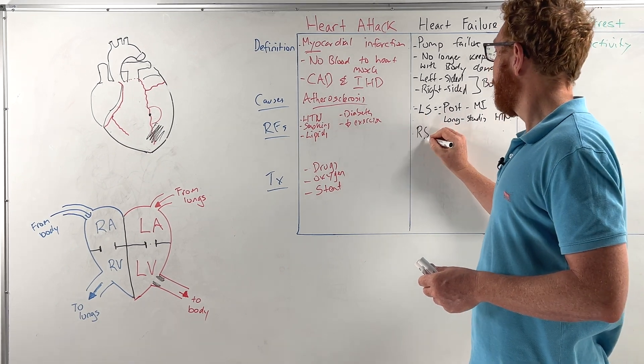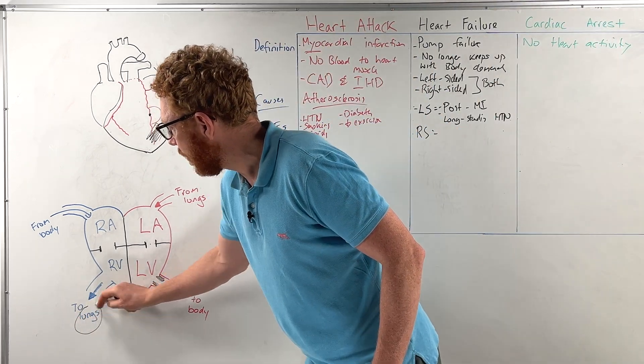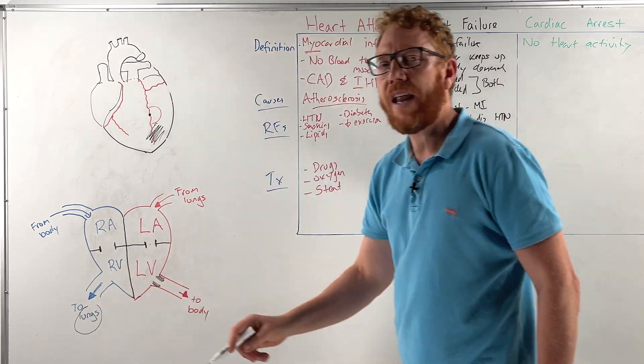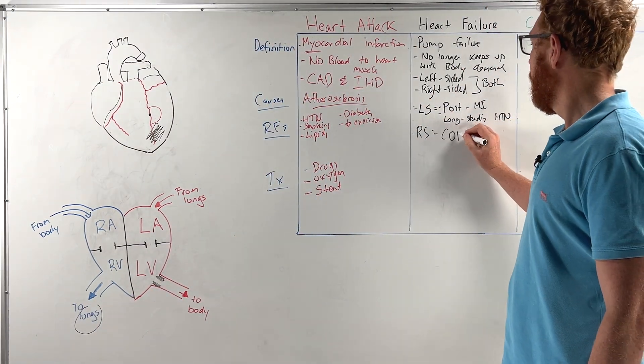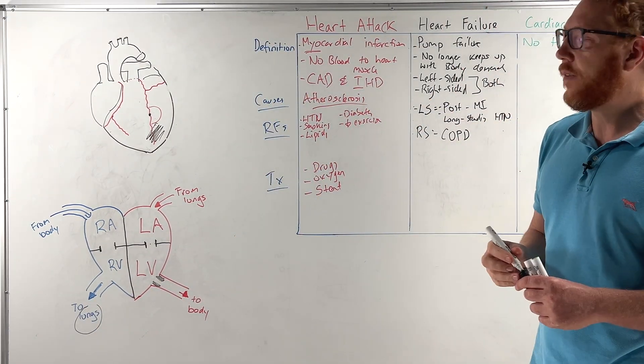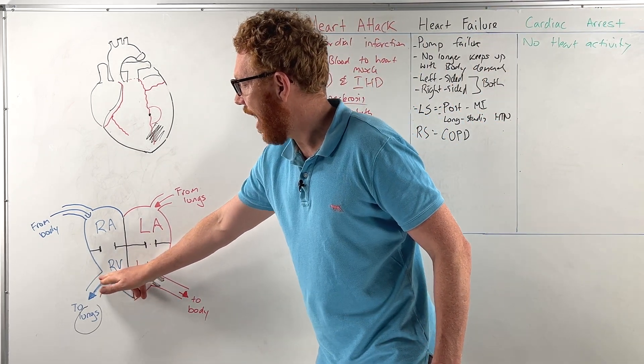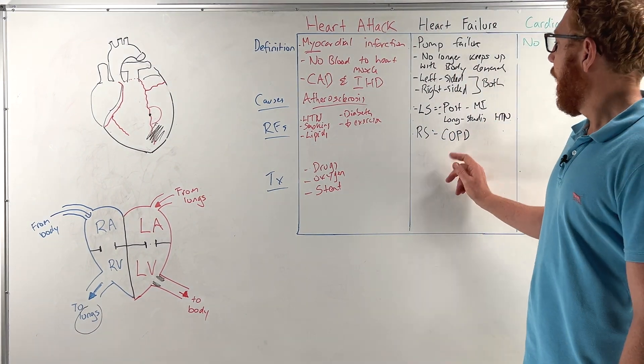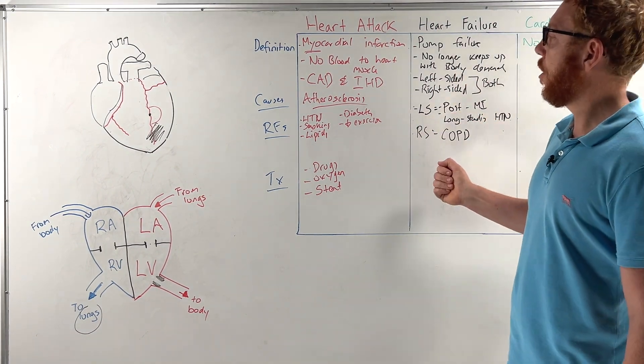Right-sided, usually that's associated with something wrong with the lungs because the right ventricle is trying to push blood to the lungs. So if we have a lung condition like COPD, which is chronic obstructive pulmonary disease, that can lead to hypertension in that vessel, the pulmonary trunk, which leads to the right ventricle failing. Those are the common causes associated with that.